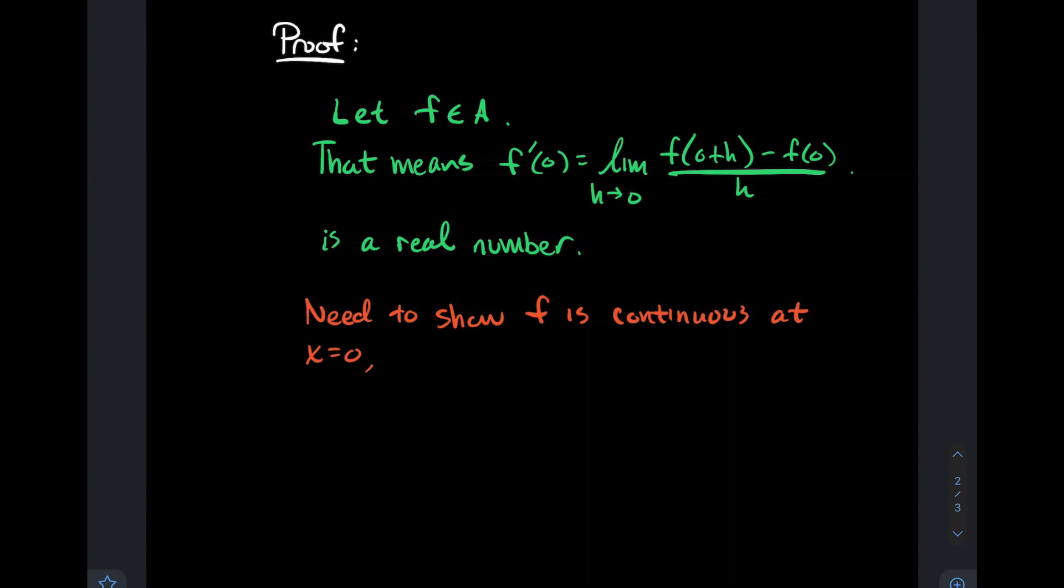Now what we want to do is show that the function's continuous at x equals 0. We need to remember what's the symbolic definition of being continuous. I'll write down here that the limit, as h goes to 0, of f(h) ought to just be the output of the function at 0. That's in symbols the idea that you're not picking up your pencil when you're around 0 there.